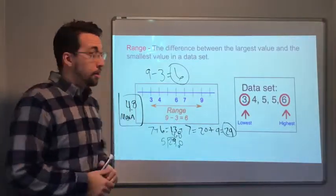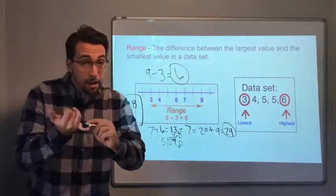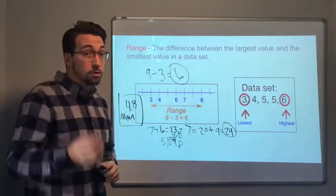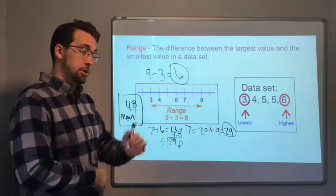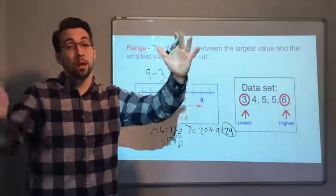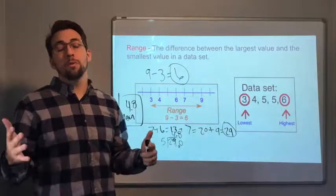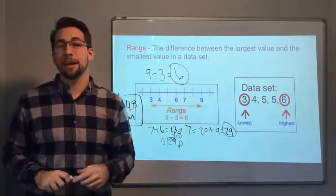This is it, guys. The introduction to mean or the average, the median which is the middle number, the mode which is the most frequent number, and the range which is the highest number minus the lowest number. The difference between those two numbers. Hope you enjoyed this video. Have a great day, and we'll see you next time.